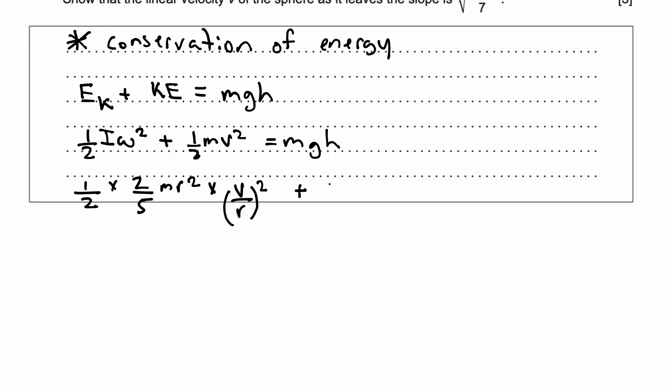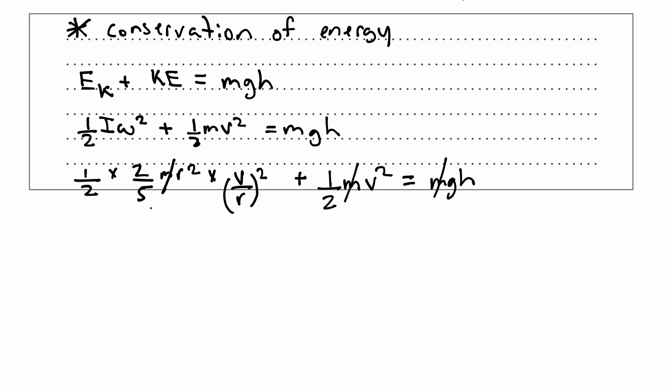So this plus ½ the mass times linear velocity squared is going to be equal to mgh. Now I can cancel out m from the equations as they can be taken out and factored out and cancelled. Now what else can I do?